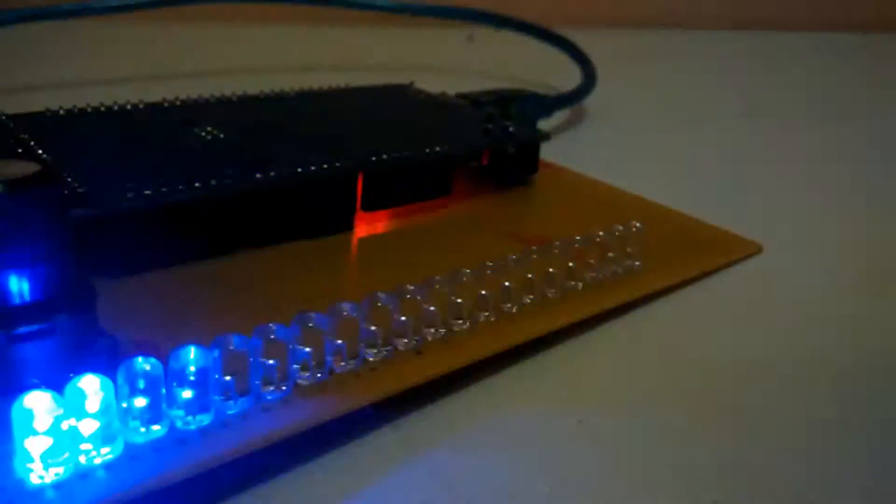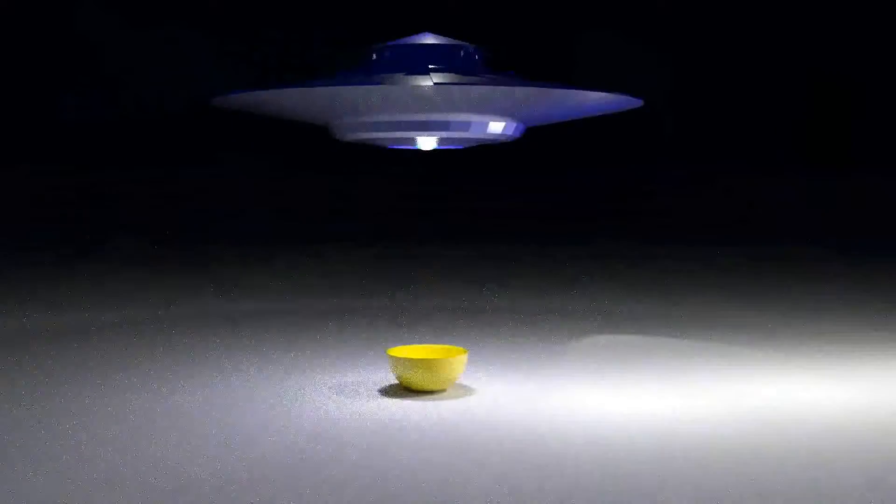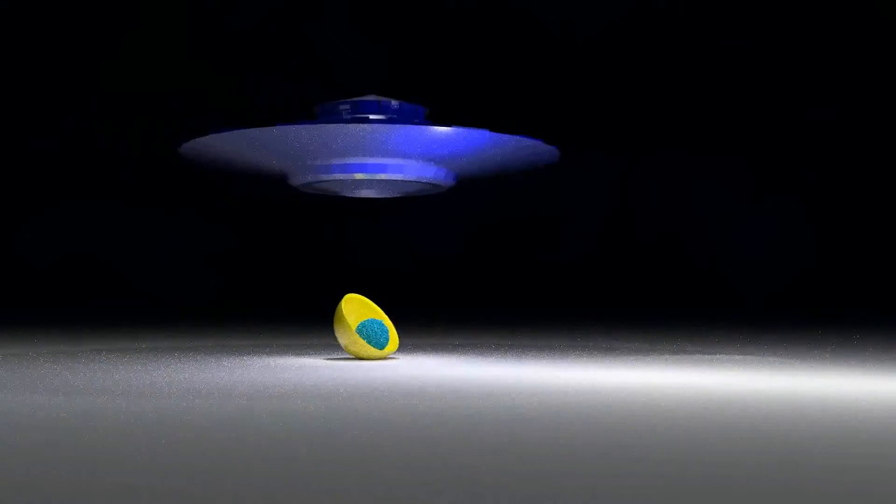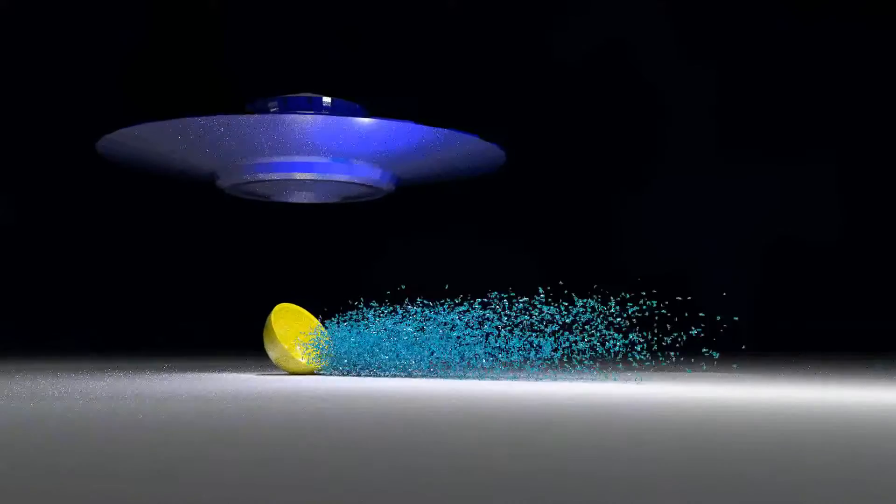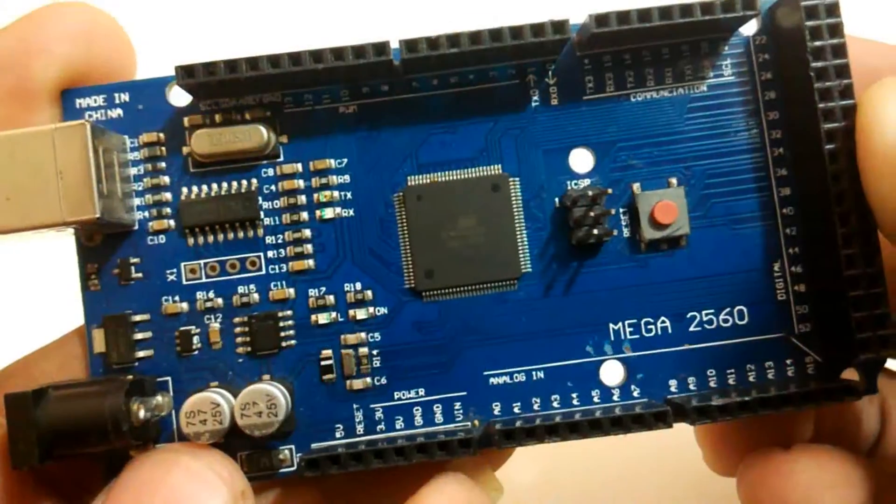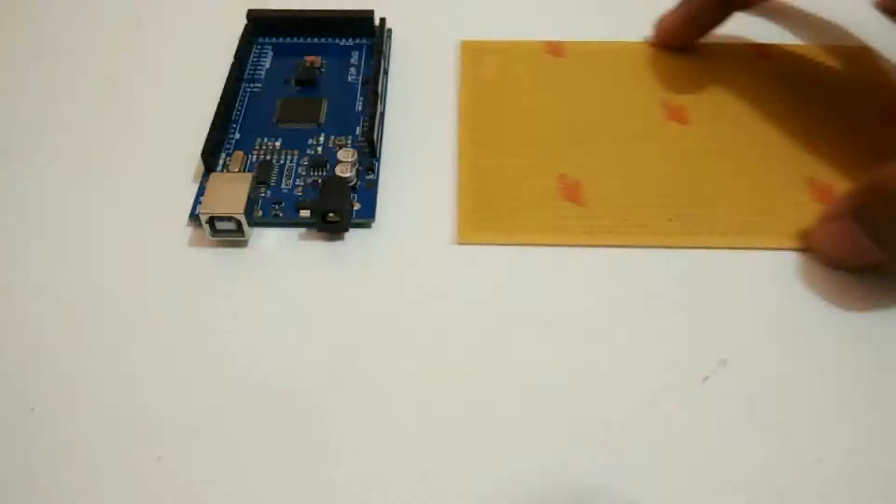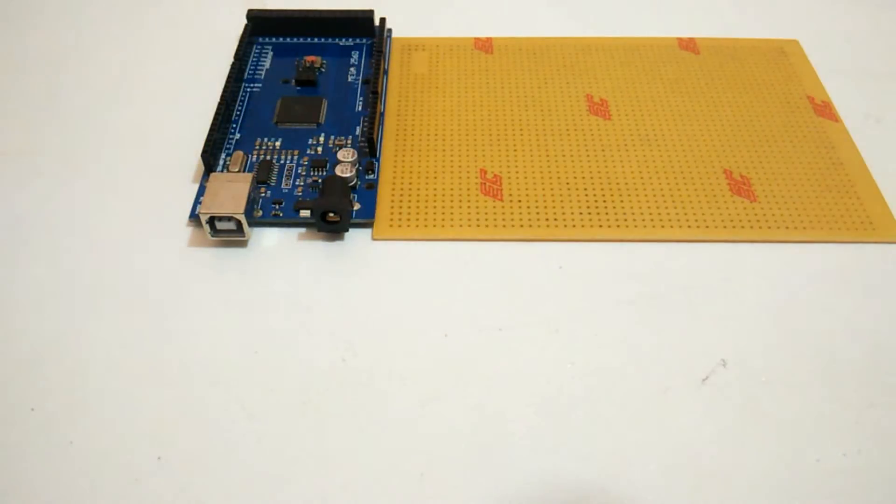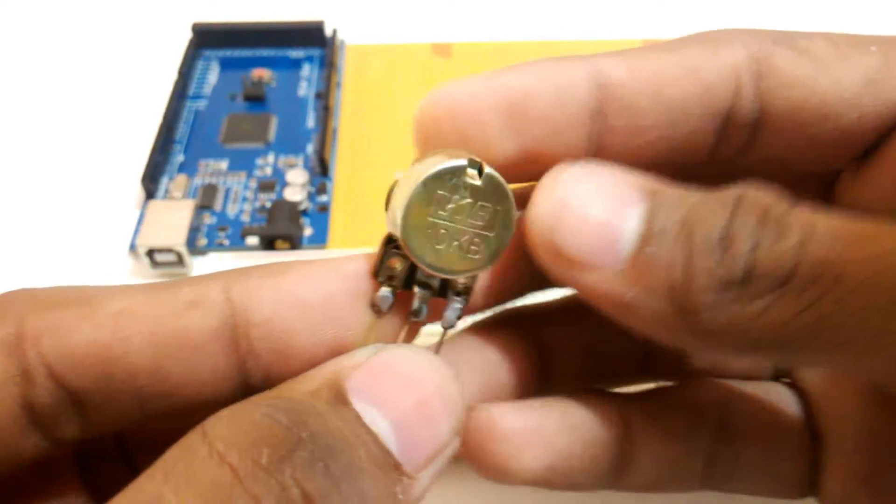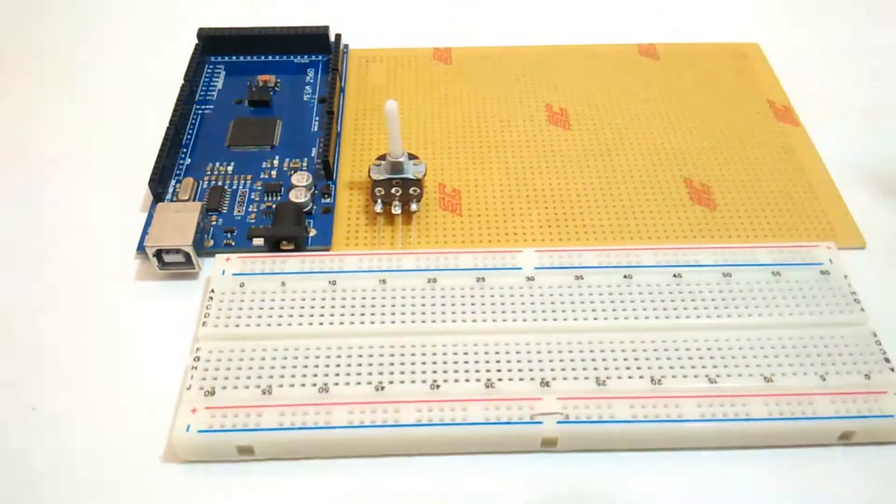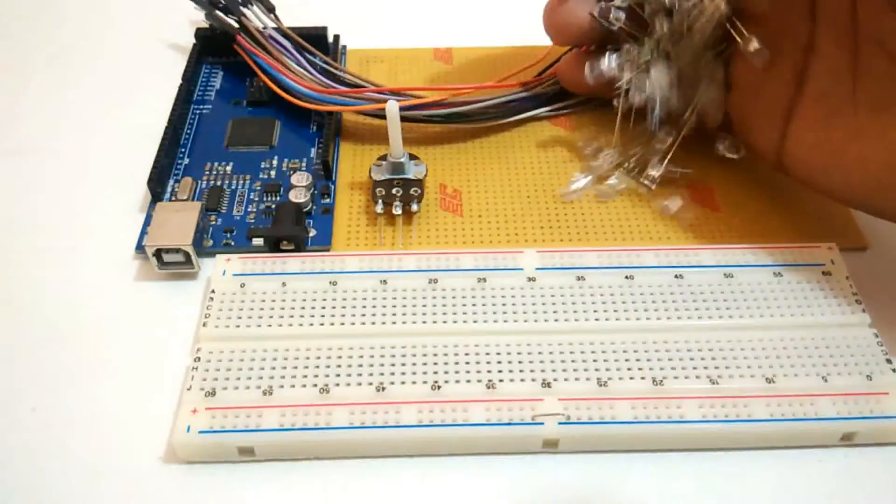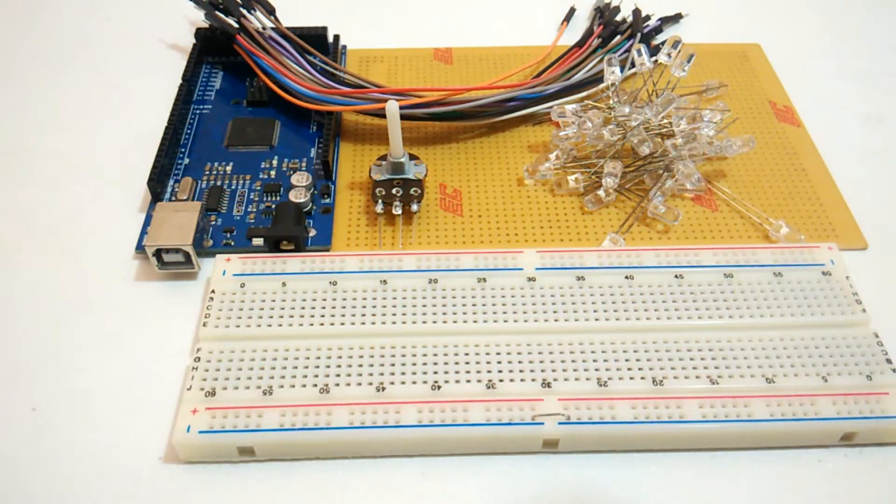So let's get started. The parts needed for this build are quite a few. I'll be using an Arduino Mega, a breadboard, a copper dot PCB, a 10 kilo ohm potentiometer, a few jumper wires, and some LEDs. I'll be using red, green, and blue ones.